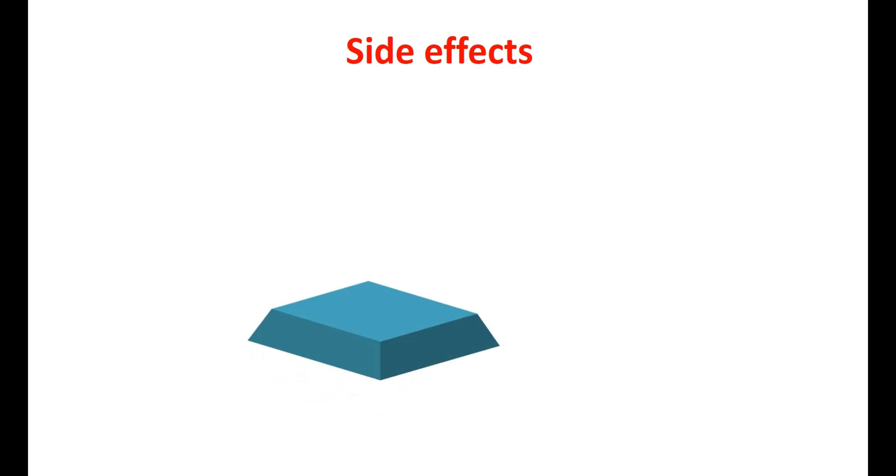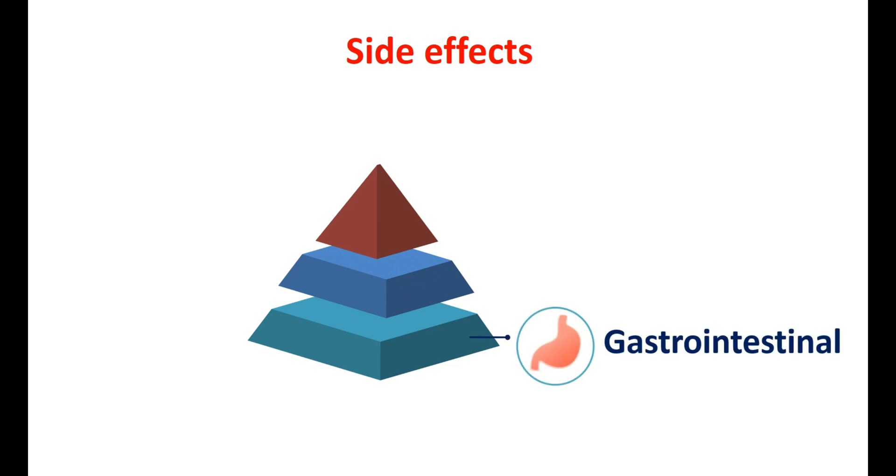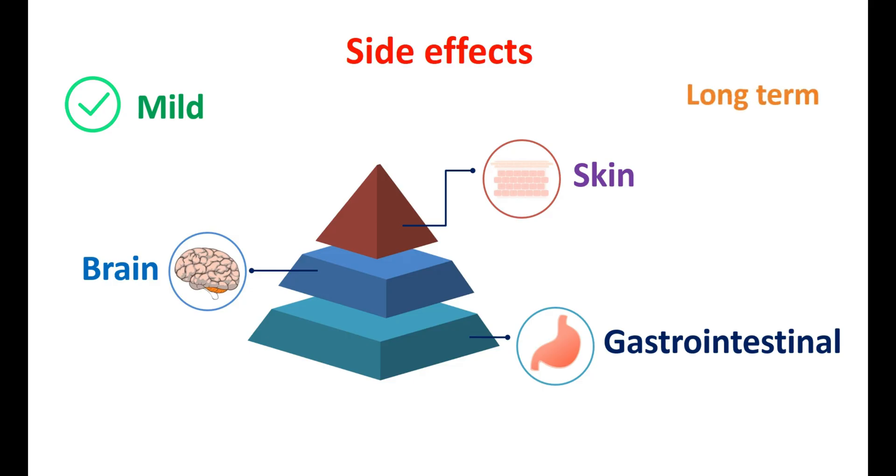The side effects of lithium can be classified into three categories based on their extent and severity. The common side effects are related to the gastrointestinal system. A few other side effects are related to the central nervous system. A small component of side effects is associated with the skin. Most of the side effects are shortly developed, mild, and well-tolerated. However, a few side effects develop with long-term use and may be troublesome. So, let's discuss the side effects of lithium one by one.